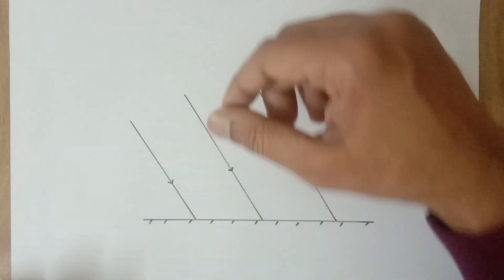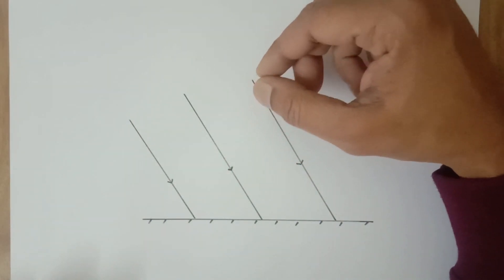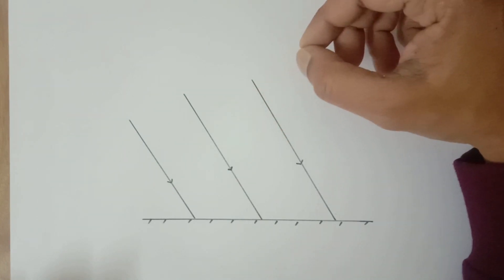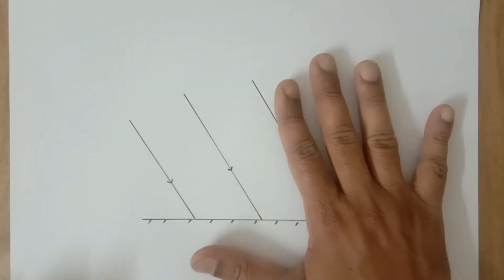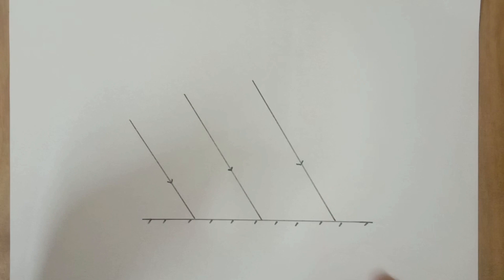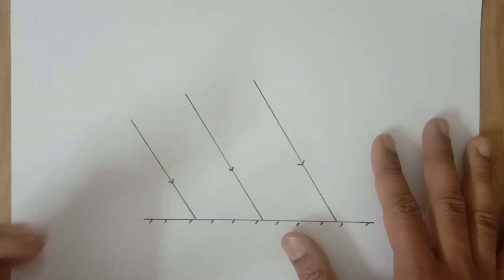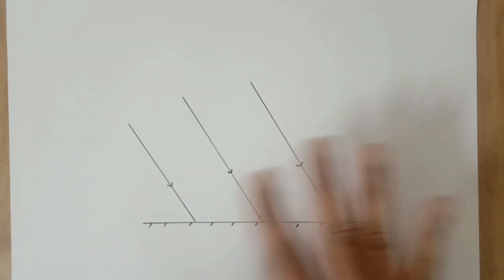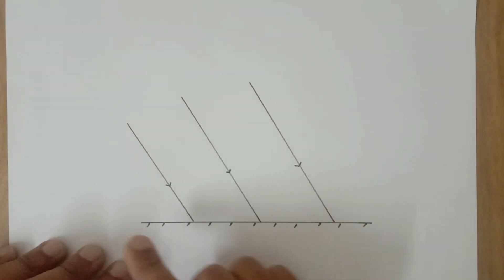Hello everyone. In this video lecture I am going to prove the laws of reflection using Huygens' principle, and I am also going to demonstrate how to draw the diagram given in the NCERT textbook. This is a topic related to Grade 12 wave optics — Huygens' principle and proving the laws of reflection — and we'll be using the concept of wavefront and other related things.